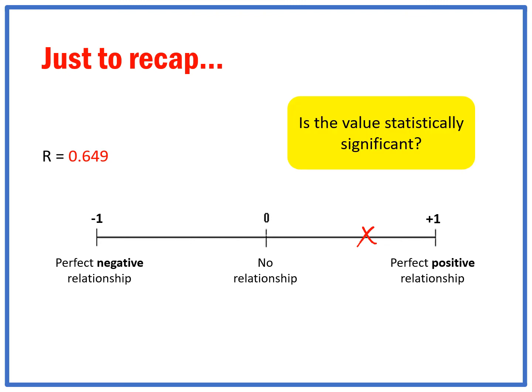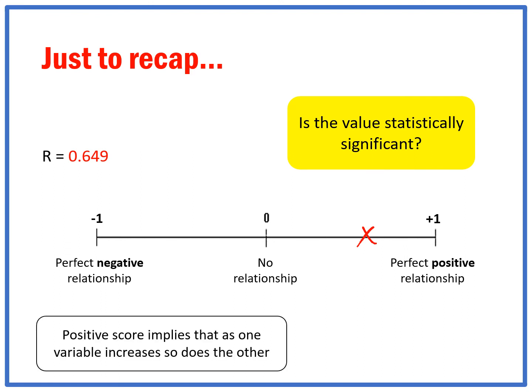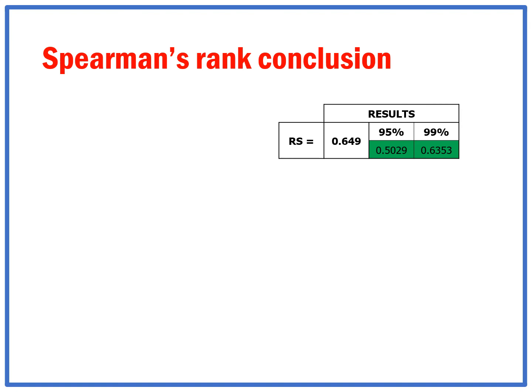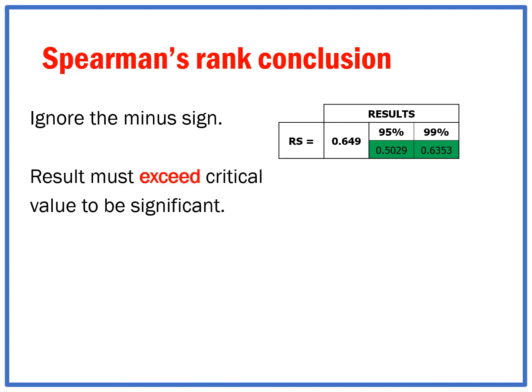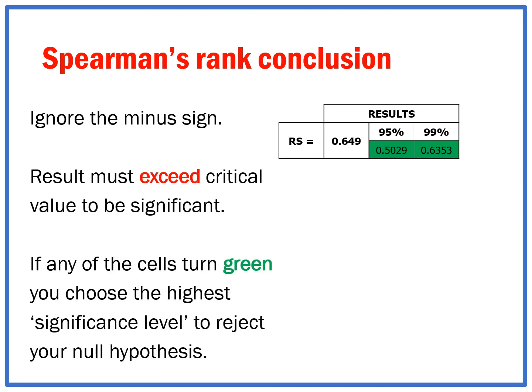What the statistical test tells me is whether this value is statistically significant — whether I can use this value and state at a certain percentage level that my data reflects reality and reflects what the whole river is doing. My score is 0.649, and both boxes at 95% and 99% statistical significance level turned green. Spearman's rank ignores a minus sign. The result must exceed the critical value to be significant, and 0.649 exceeds both values. I can choose the highest confidence level and reject my null hypothesis at a 99% significance level — I am very confident it reflects reality.